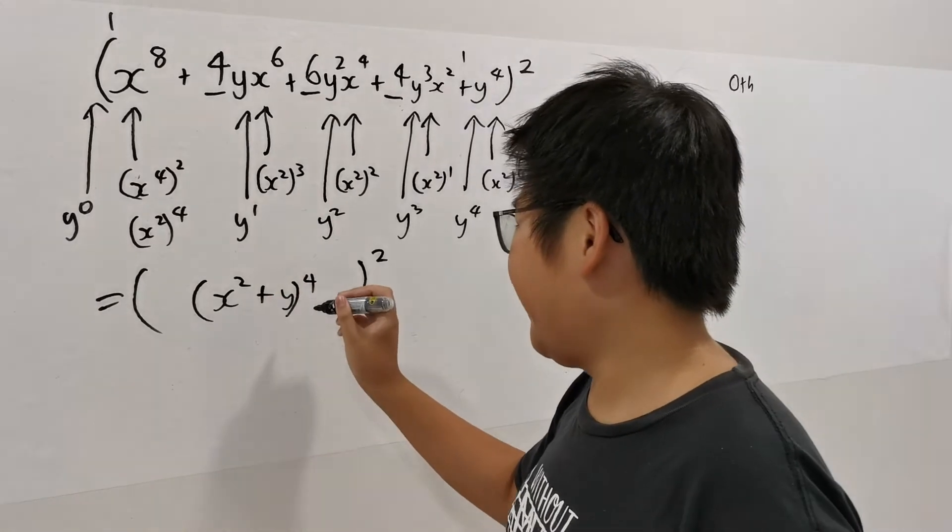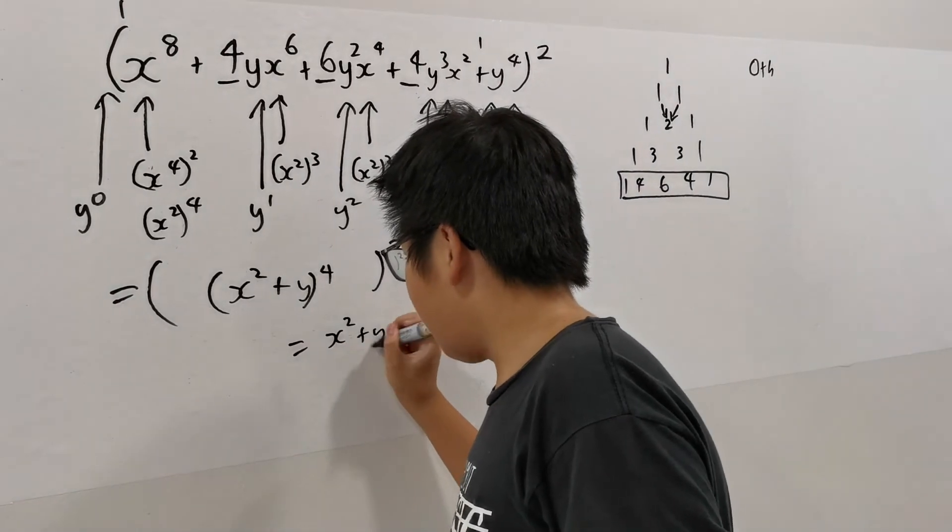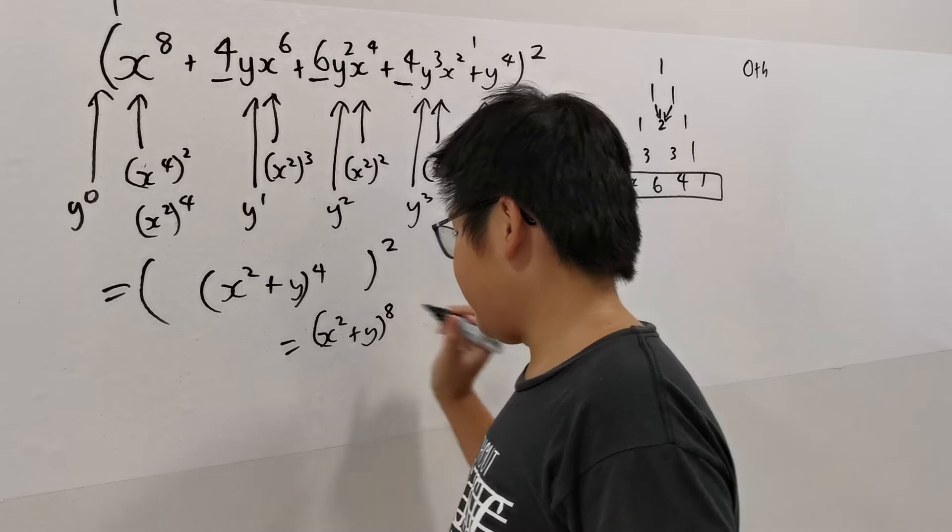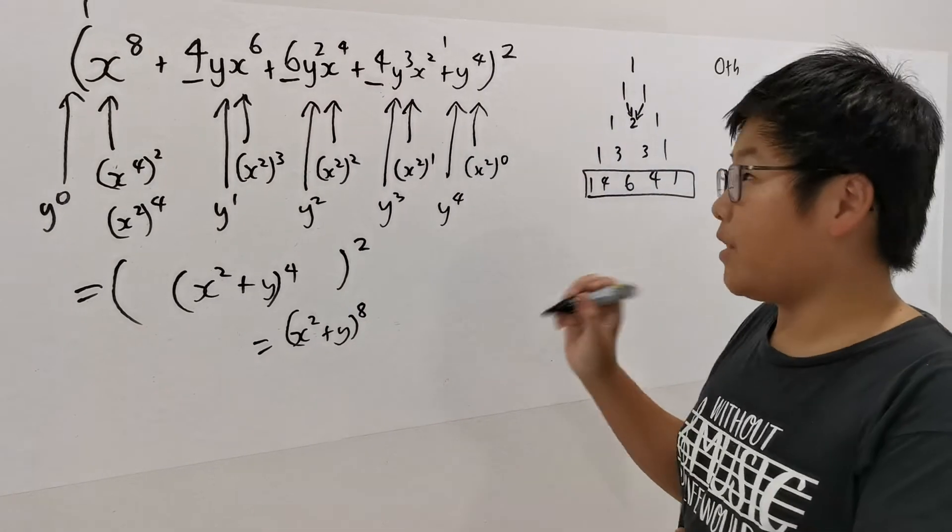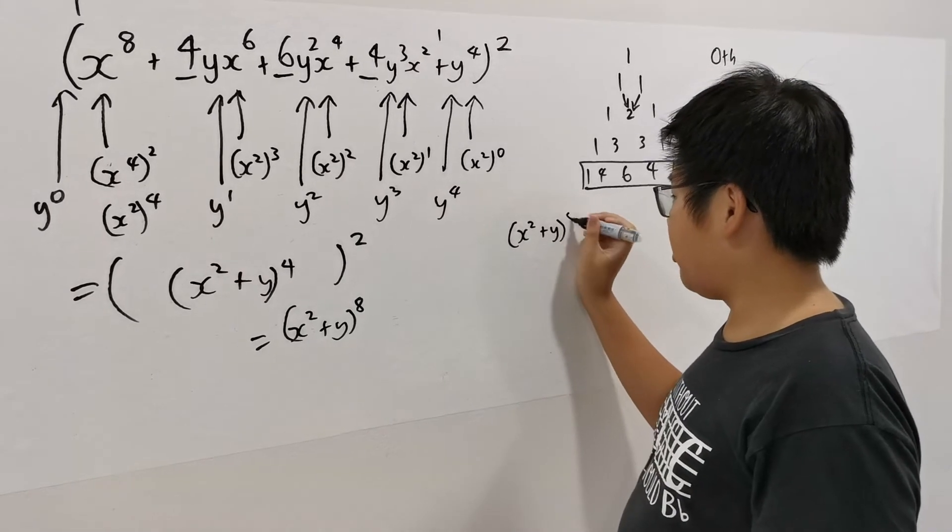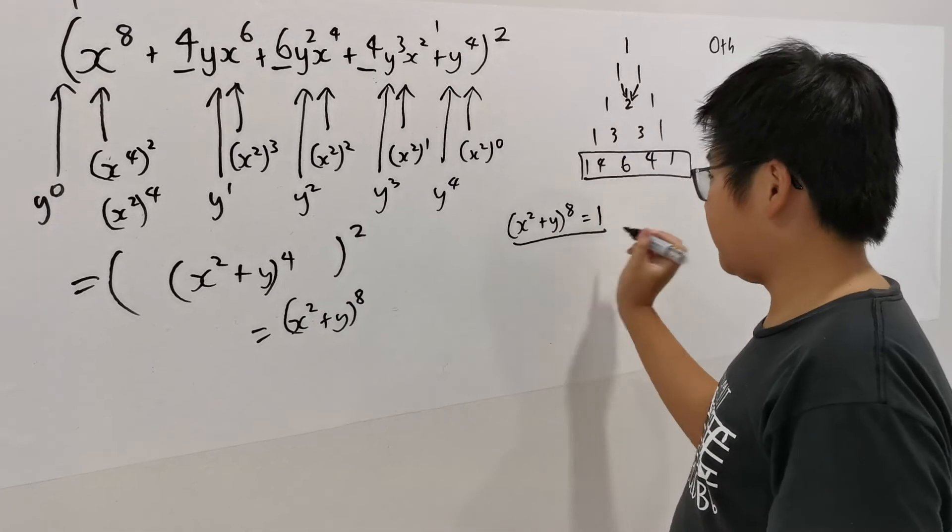Now, (x squared plus y) to the 4 and 2, equals to (x squared plus y) to the power of 8. That we are asked to solve (x squared plus y) to the power of 8 equals to 1. This is the graph that we want.